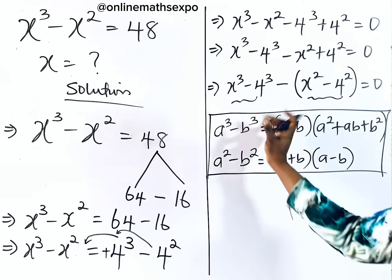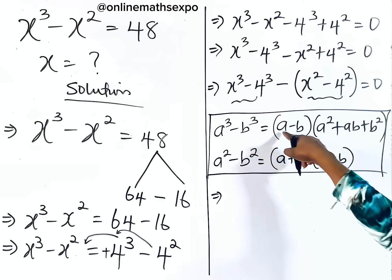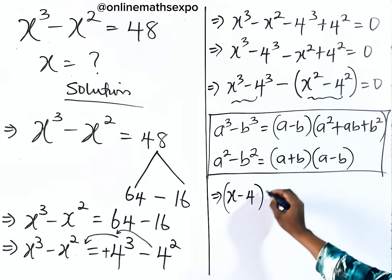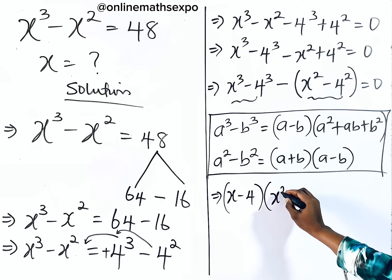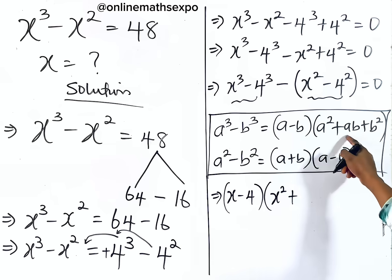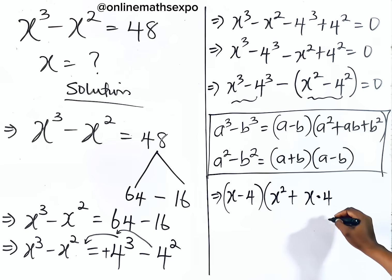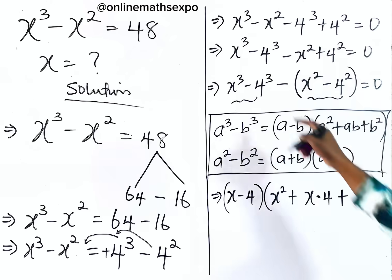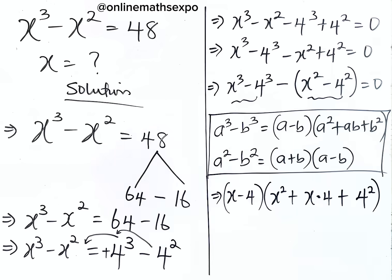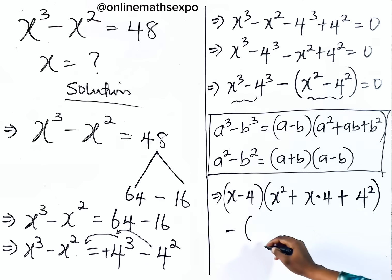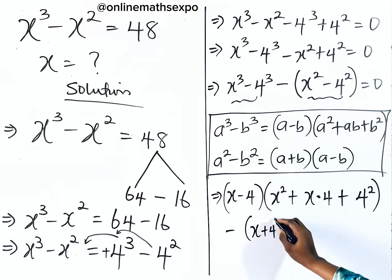So we're going to apply these two identities. For the first one, using the difference of cubes, we are going to have x minus 4, into x squared plus — ab means multiply the two terms — x multiplied by 4, plus 4 squared. Then minus, open another bracket, and applying the difference of squares, it gives us x plus 4 into x minus 4. And everything is equal to 0.